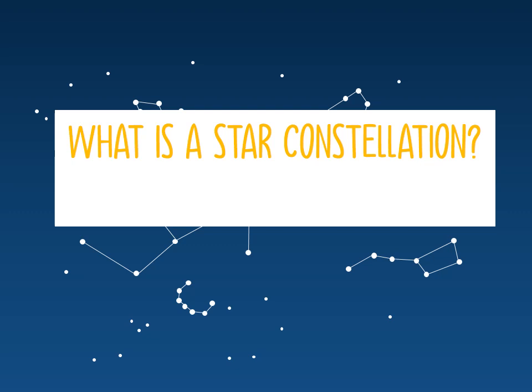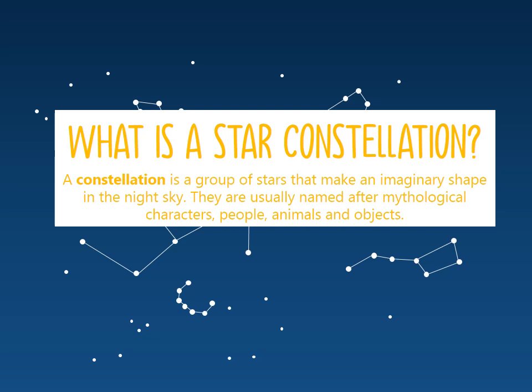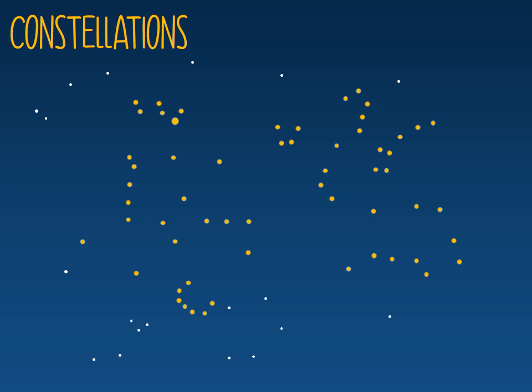Our keyword for today is constellation. What is a star constellation? A star constellation is a group of stars that makes up an imaginary shape in the night sky. They usually are named after mythological characters, people, animals, and objects. Have a think about what constellations you've seen in the past — what would you be able to recognize? Try and say the word 'constellation' to the ceiling. Now say 'constellation' to your toes. It's a pretty tricky word to say, but the more we say it the better we get.